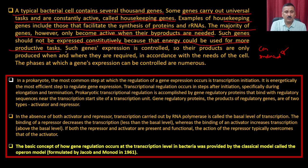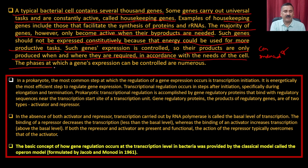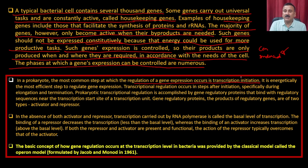Induced gene expression is controlled so that their products are only produced when required by the cell. The phases at which gene expression can be controlled are numerous. In prokaryotes, the most common step is transcriptional initiation. Since transcription and translation occur together in prokaryotes, there is no separate translational regulation. As soon as RNA is produced, it is taken up by the translational machinery for protein synthesis. What you can control is the initiation — if you do not allow RNA polymerase to bind the promoter, transcription is blocked.